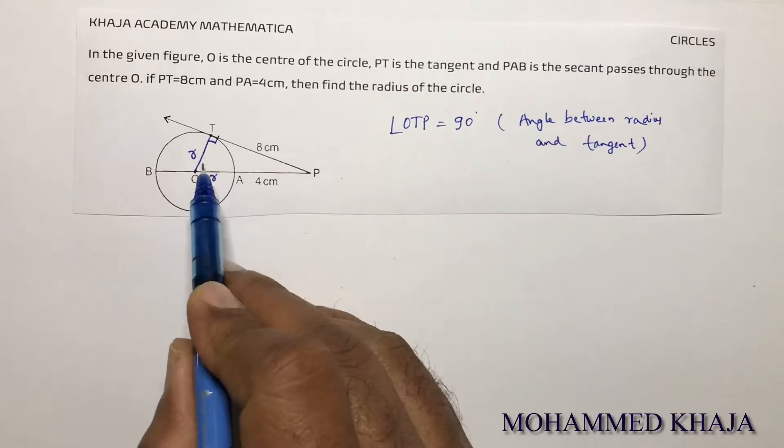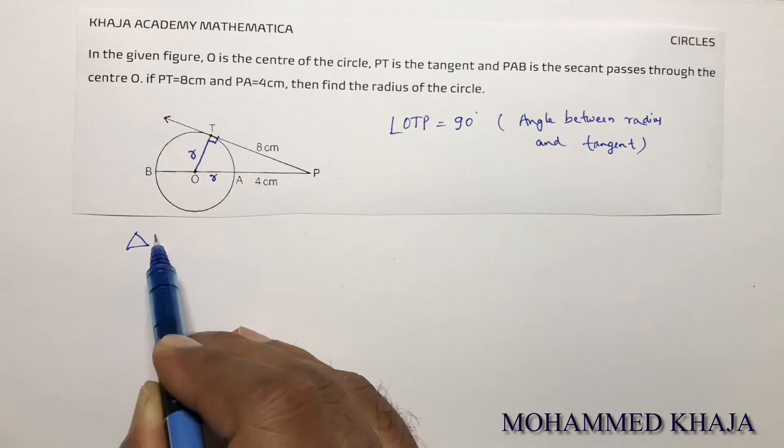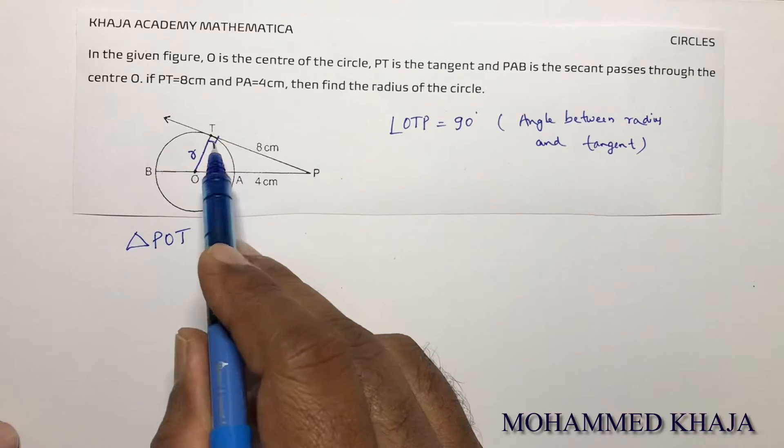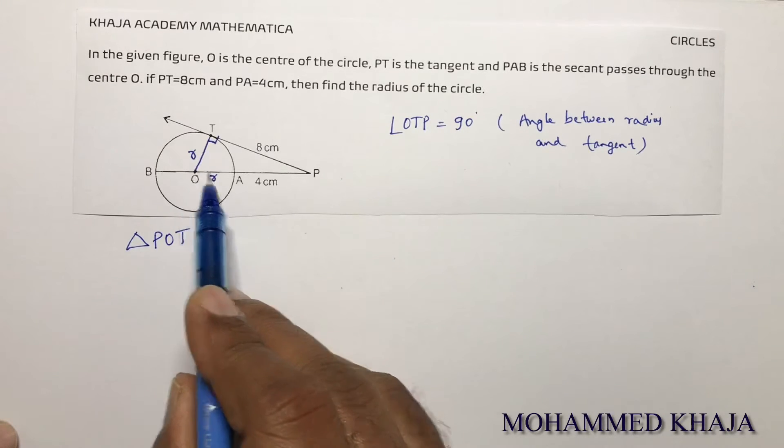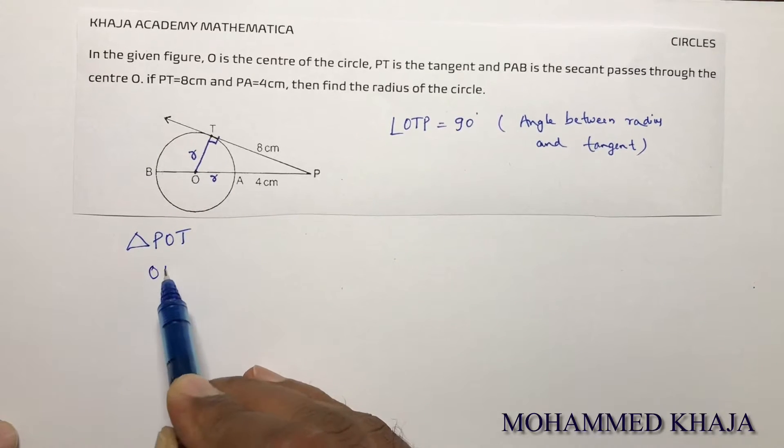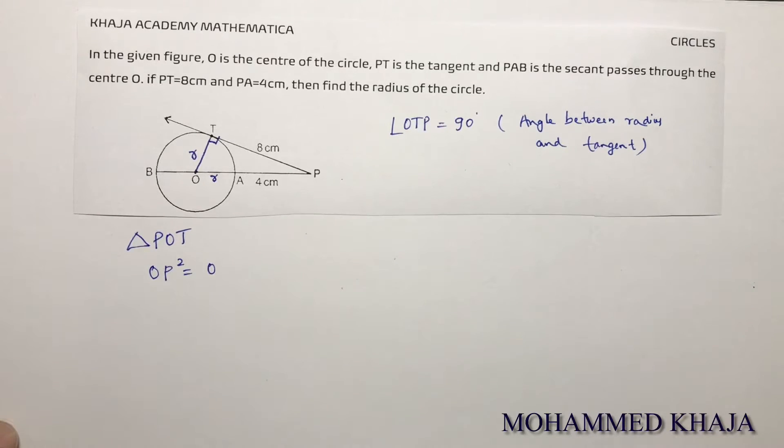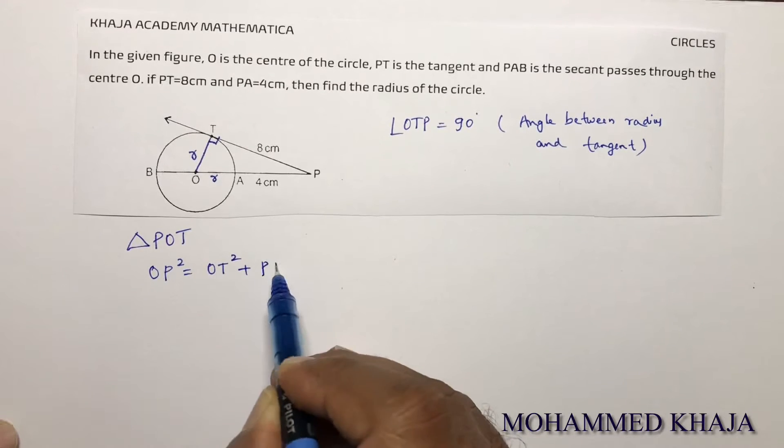As it is 90 degrees, triangle POT is a right angle triangle with right angle at T. I'll apply Pythagoras theorem. The hypotenuse OP squared equals OT squared plus PT squared.